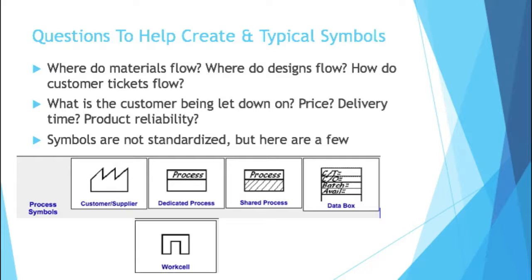Here are some process symbols. Customer or supplier is the first symbol on the top left. You've got a dedicated process, you have a shared process, you have a data box that gives you data about a process or perhaps a product. Then on the bottom there, you have an image that represents a work cell — a physical work cell.